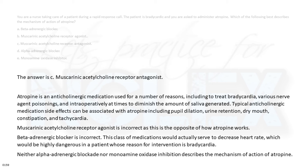Muscarinic acetylcholine receptor agonist is incorrect, as this is the opposite of how atropine works. Beta-adrenergic blocker is incorrect — this class of medications would actually serve to decrease heart rate, which would be highly dangerous in a patient whose reason for intervention is bradycardia. Neither alpha-adrenergic blockade nor monoaminoxetase inhibition describes the mechanism of action of atropine.